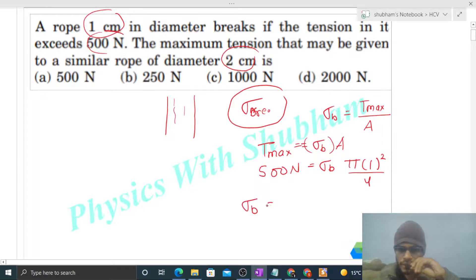From here you can find the breaking stress of this material, which will be 500 divided by π times 4. This will be in Newton per centimeter squared.